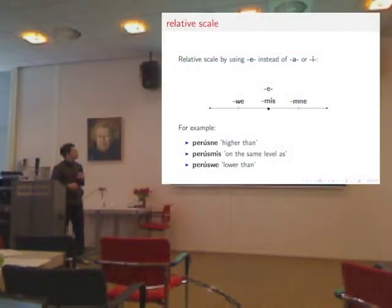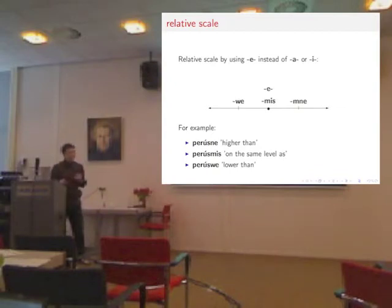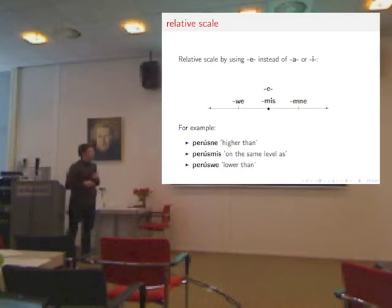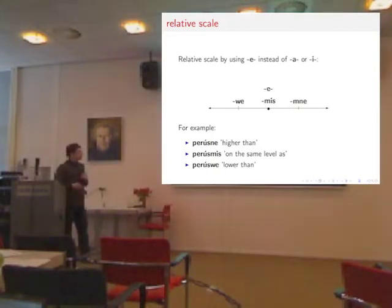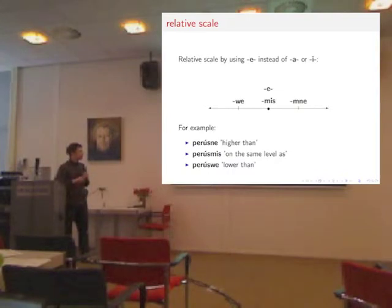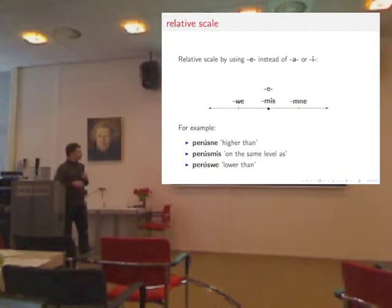The examples before were all on an absolute scale. But if you want to compare objects, you go to a relative scale, and things change a bit. You don't need the signal vowels; you just use the vowel E to denote relative value. The meanings of the suffixes also change: 'ned' denotes a value which is higher, 'be' a value which is lower, 'miss' denotes a value which is the same. So 'perus' becomes relative vertical position: 'perusned' means higher than, 'perusmiss' means on the same level as.